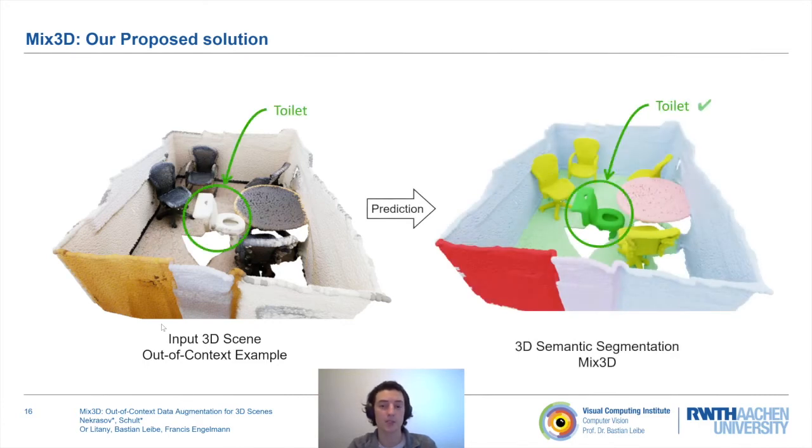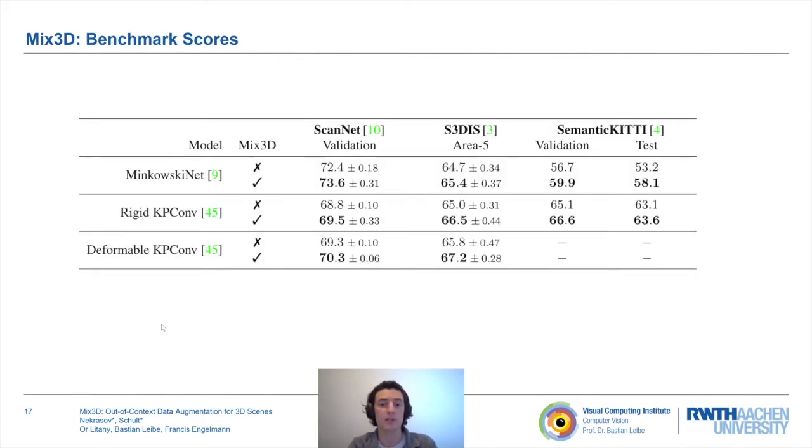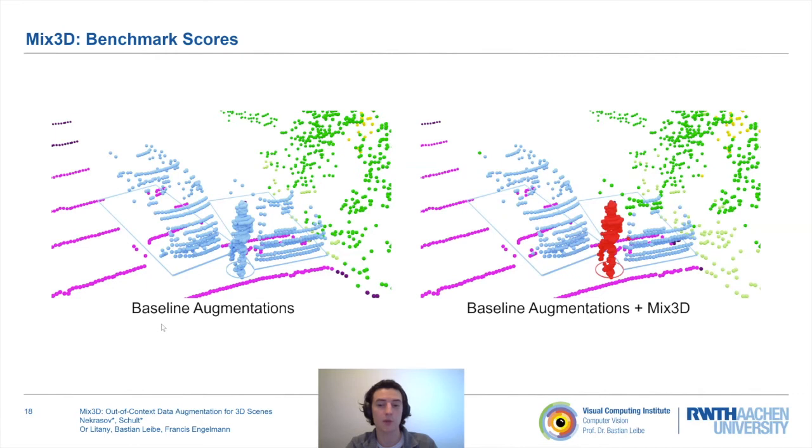In our experiments, we trained state-of-the-art point-based and voxel-based methods with Mix3D. We observed consistent improvements on the popular indoor datasets and the outdoor dataset on both test and validation. Out-of-context generalization is even more important in safety-critical settings, such as autonomous driving, where rare but dangerous situations are often not well represented in the training set.